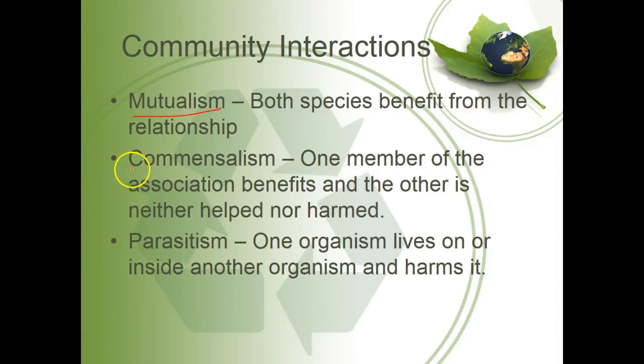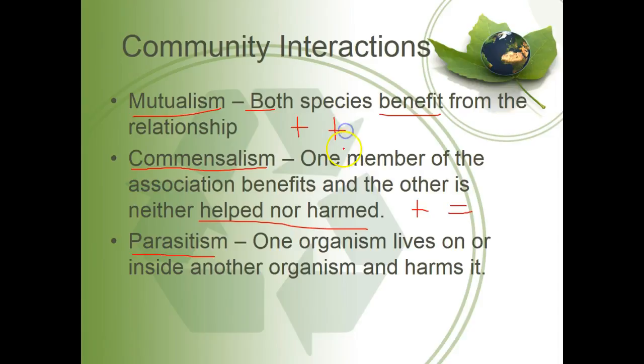Mutualism is when both species benefit — a plus-plus interaction. Commensalism is when one member benefits and the other is neither helped nor harmed — a plus-neutral interaction. Parasitism is when one organism benefits and the other is harmed — a plus-minus interaction. So: mutualism is plus-plus, commensalism is plus-neutral, and parasitism is when one organism lives on or inside another organism and harms it — like a mosquito or a tick. They benefit; we are negatively impacted.